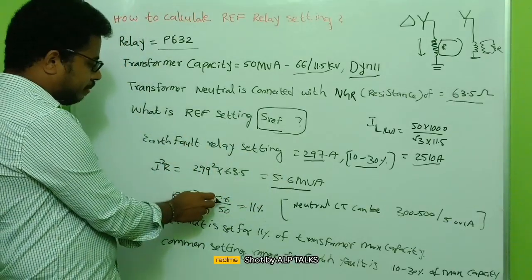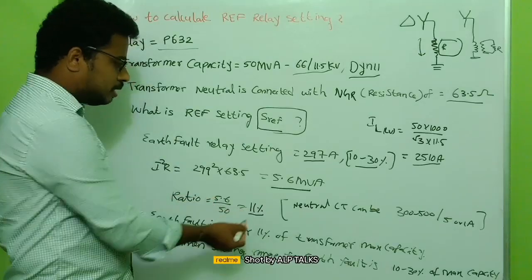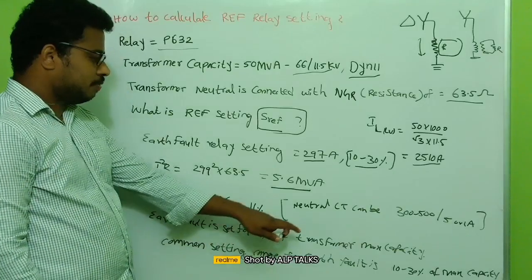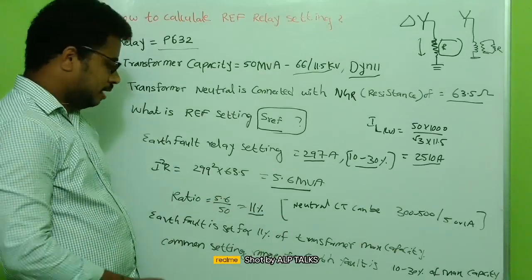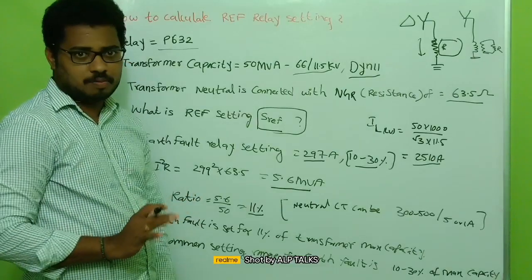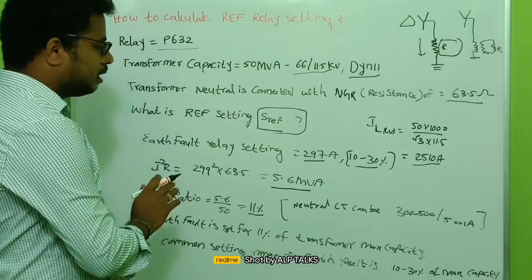So the ratio 5.6 by 50 will be 11 percent, and F1 is set for 11 percent of transformer maximum capacity. So common setting range for this is 10 to 30 percent of maximum capacity.